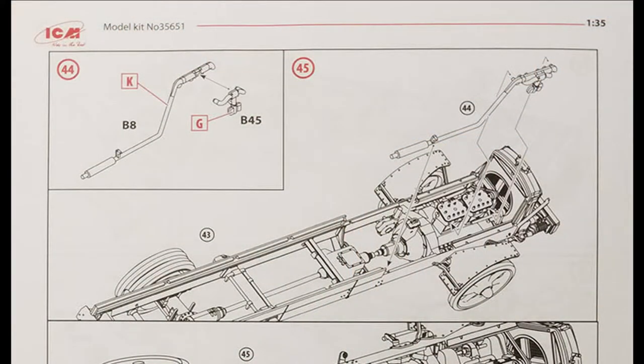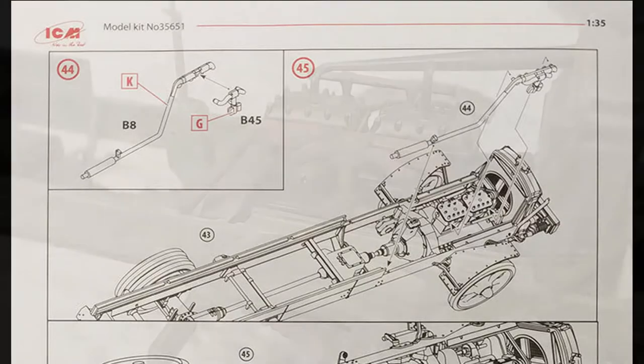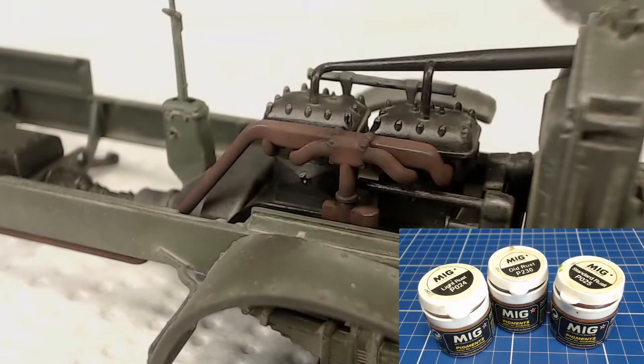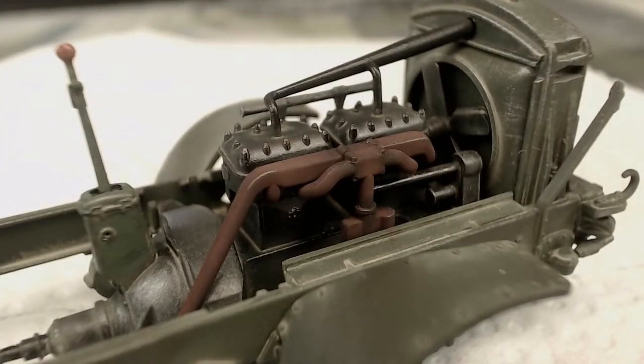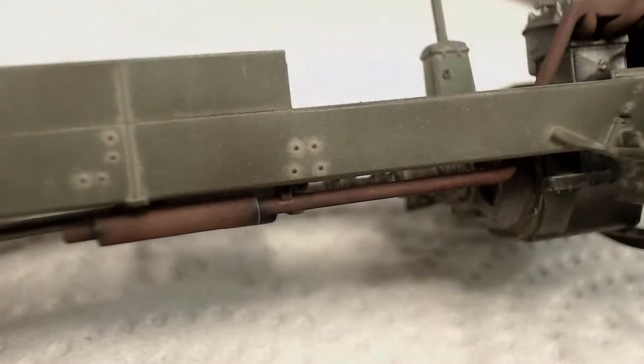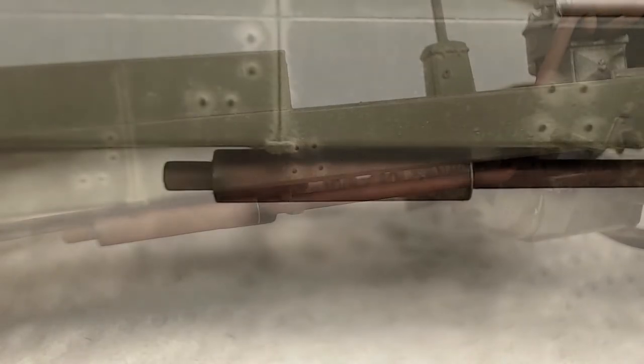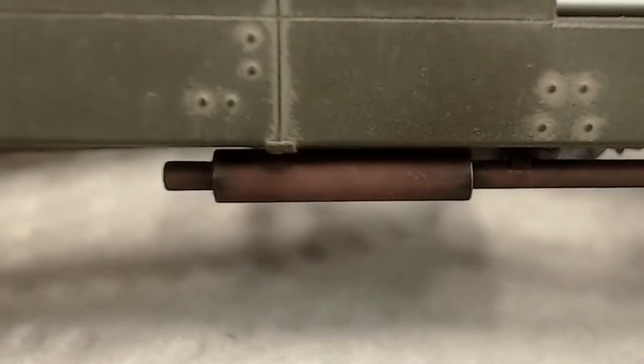Our exhaust manifold and muffler get installed quite late in the assembly. These exhaust components atop of their flat black enamel base coat got some rust color pigment powders. We can also use some black oil paint and dab it on to replicate soot, oil and grease. And some of the edges get a swipe of our pencil.